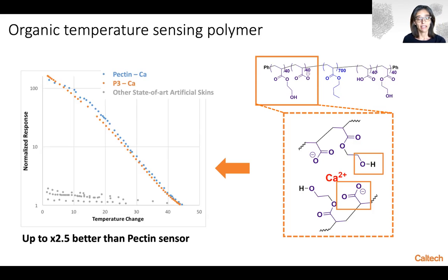In fact, when we change the cation type and species from calcium, for example, to cobalt or iron, we can achieve temperature responsivity which is up to 2.5 times better than the pectin films alone.